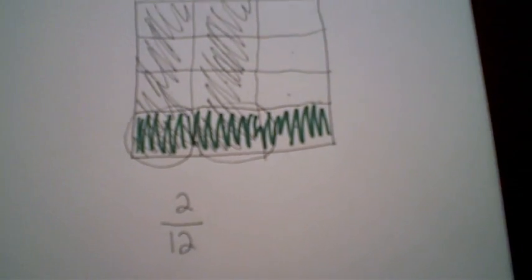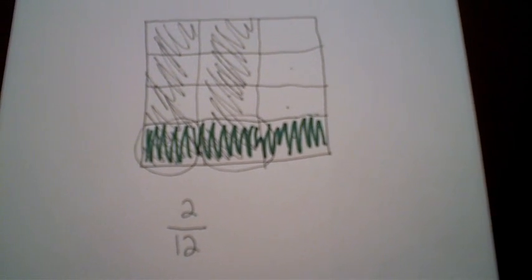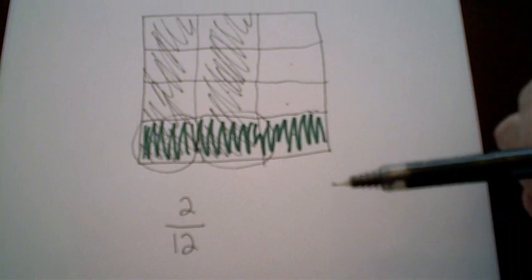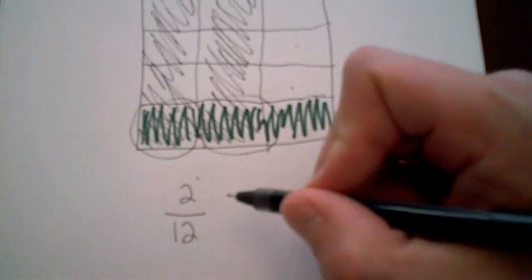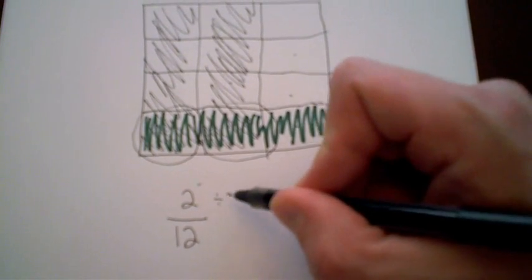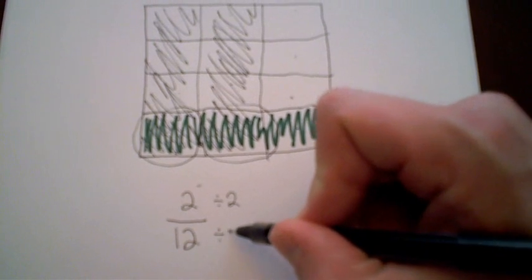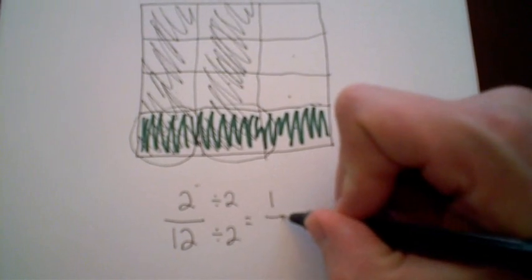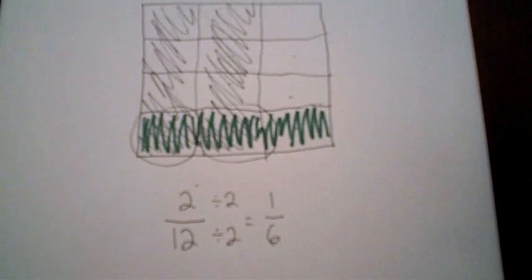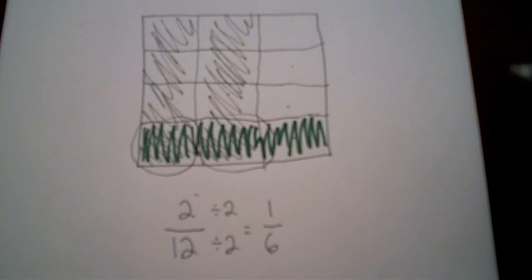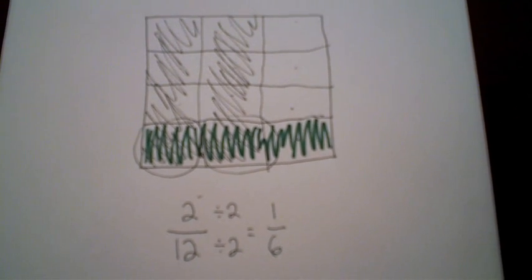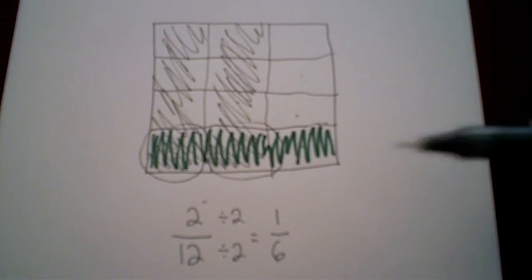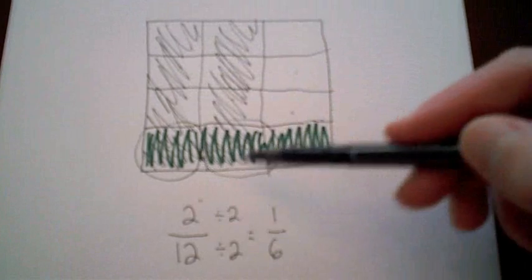Because remember that denominator is always telling you how many pieces make up the whole. And in this case the two represents how many pieces James bought. So he bought two-twelfths of the original brownie. We could simplify by dividing both the numerator and denominator by two, which would give us one-sixth. So James bought one-sixth of the original brownie, based on the fact that he bought one-fourth of what was left.